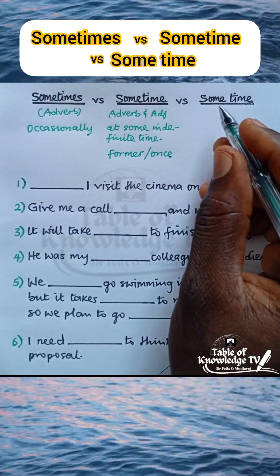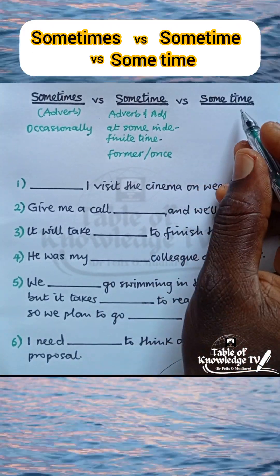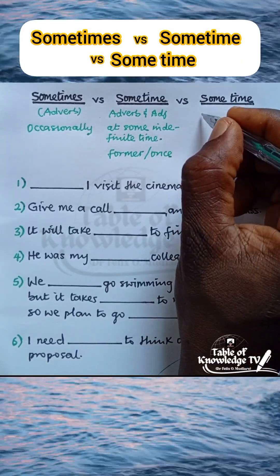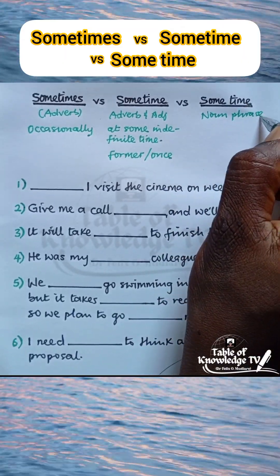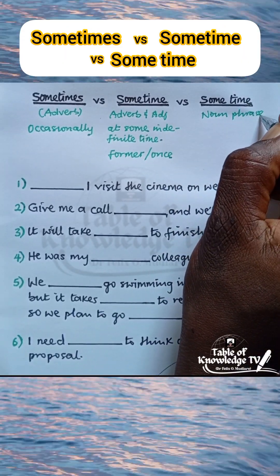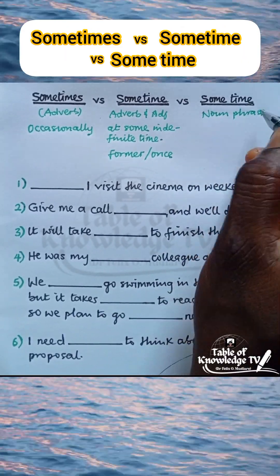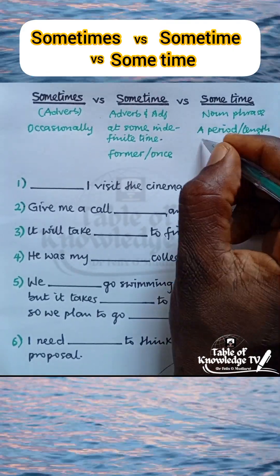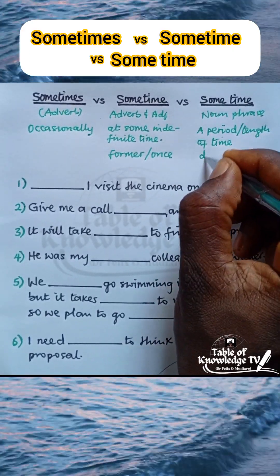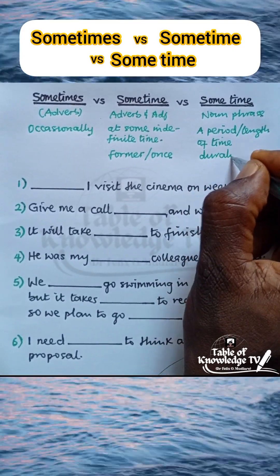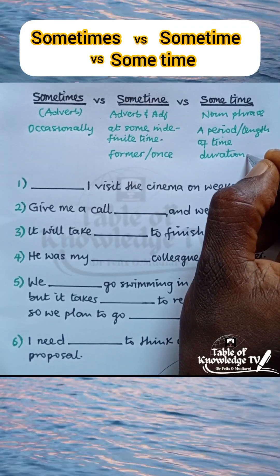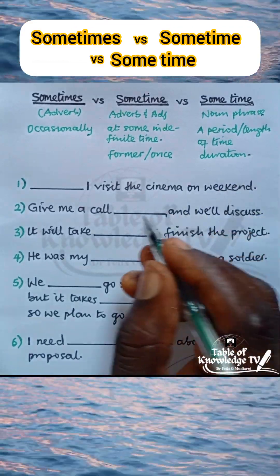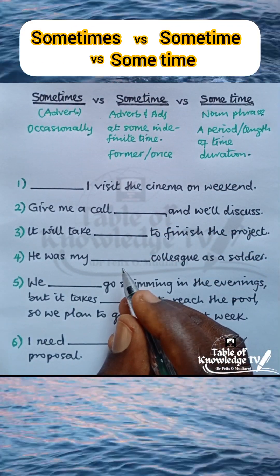Some time, where 'some' is separate from 'time', is a noun phrase and it means a period or a length of time — that is, a duration. With this knowledge, let us now attend to the questions.